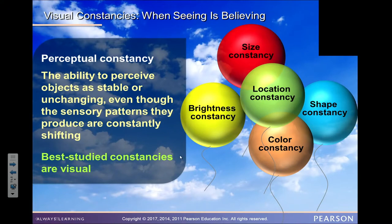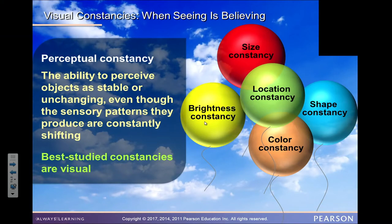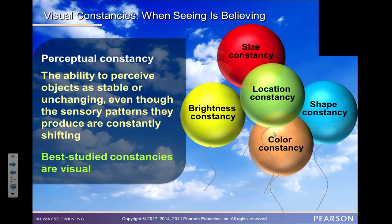Just because a balloon is further away or closer up, we still see a bright balloon as a bright balloon; if it's a large balloon, we still see it as large. The constancy in our brain about what we see is just that — it's constant.